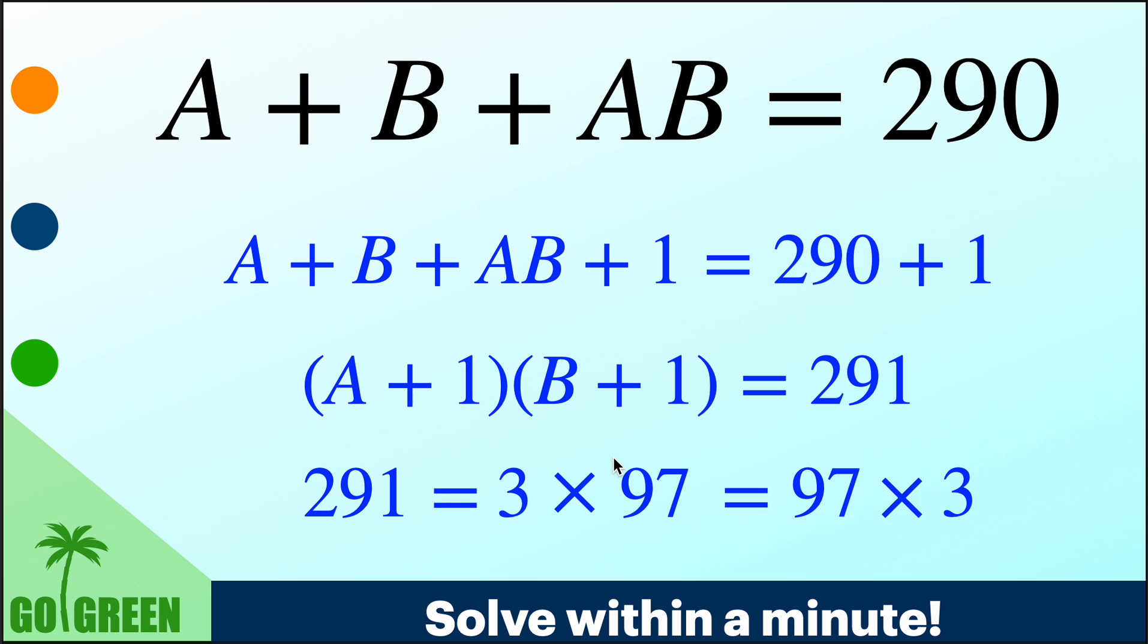And there is no other factors. You can also write in this way, 97 into 3, but there is no other factorization. So 291 has this unique expression as product of natural numbers.